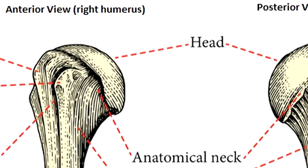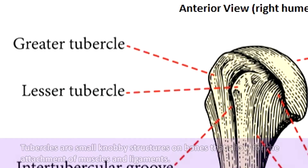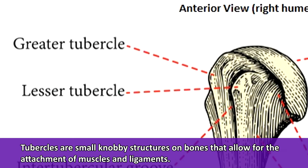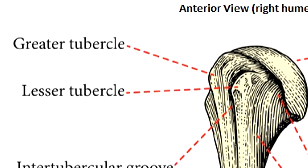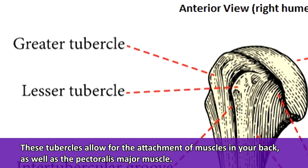Next, we have these small bumps called tubercles. Tubercles are small knobby structures on bones that allow for the attachment of muscles and ligaments. The greater tubercle of the humerus is the larger knob structure located laterally, and the lesser tubercle is the smaller knob located medially. These tubercles allow for the attachment of muscles in your back as well as the pectoralis major muscle.